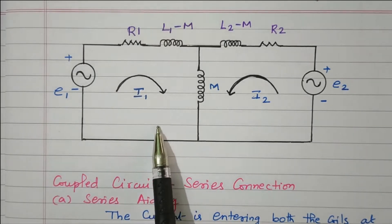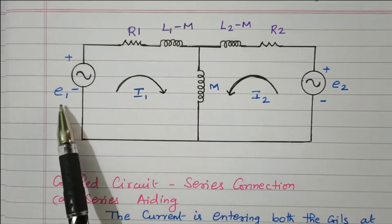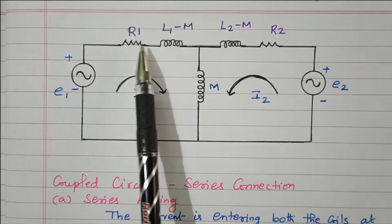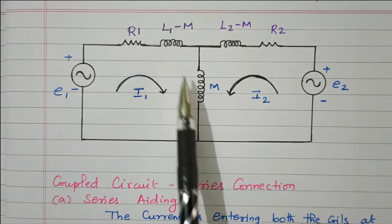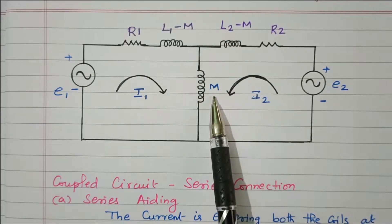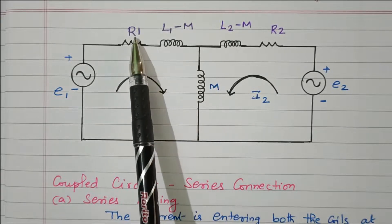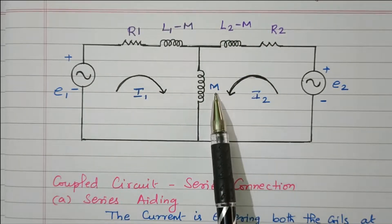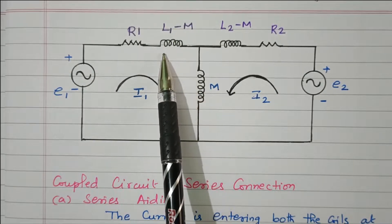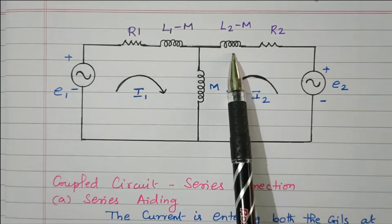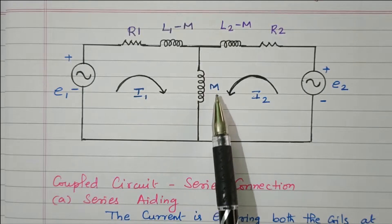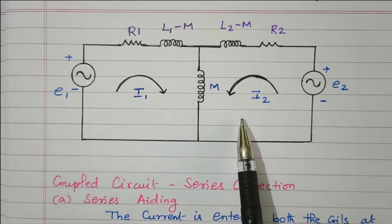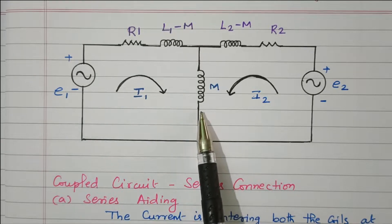In the resultant redrawn circuit, M is the common element. E1 with current I1 is on one side; E2 with current I2 is on the other. The original L1 is split into (L1 − M) and M; similarly L2 is split into (L2 − M) and M. So from L1 the mutual inductance M is subtracted giving (L1 − M), and from L2 giving (L2 − M), with M placed as the common element between both circuits through which both I1 and I2 flow.